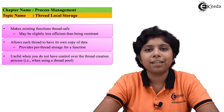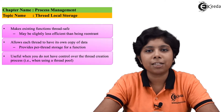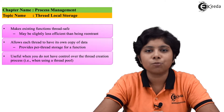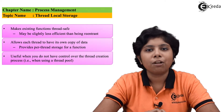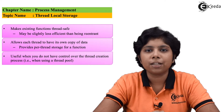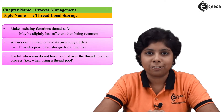Now there are certain data that threads want to allocate uniquely to themselves. This data is known as thread local storage.